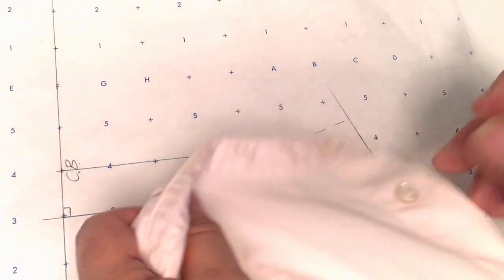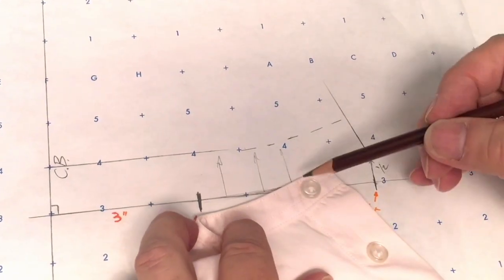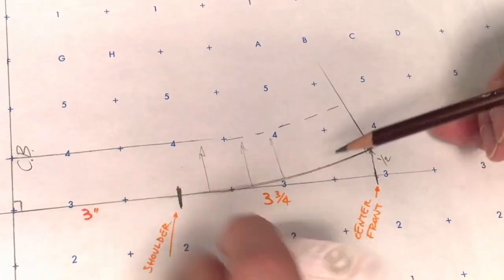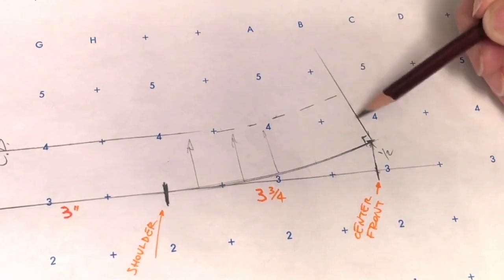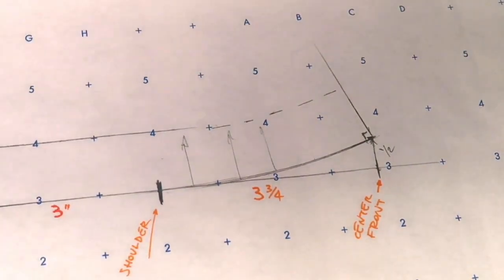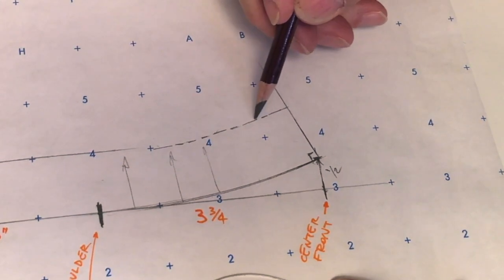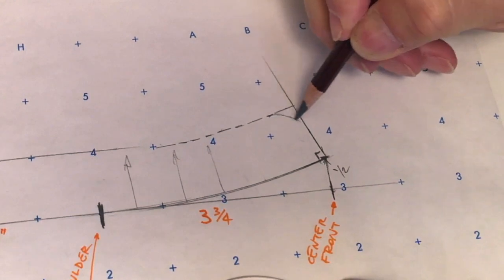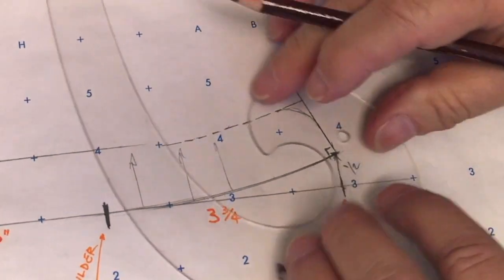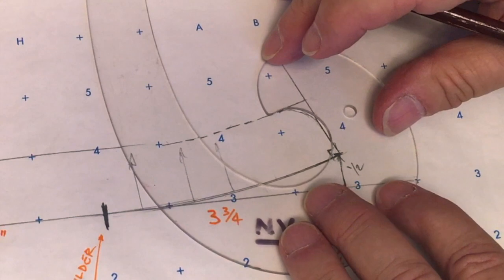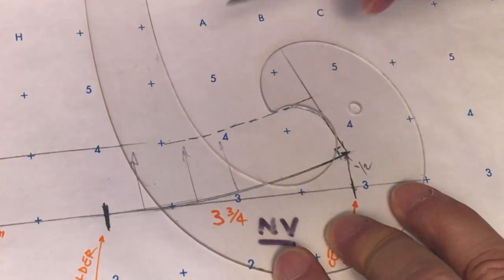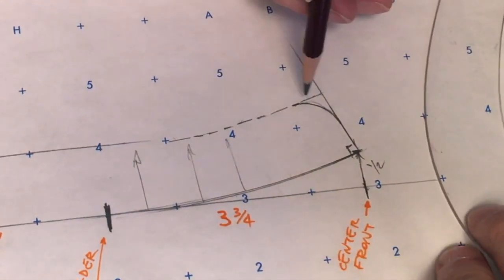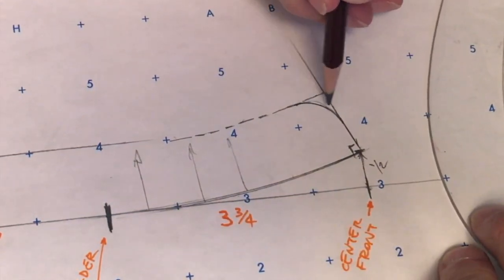Most mandarin collars have a rounded shape right at the center front, right here. So we're going to round out this corner. It won't be a 90-degree angle, it'll be a rounded corner. You can do it by hand creating a round shape, or if you want, use the inside of your French curve like so, just to create a nice smooth curve right there.